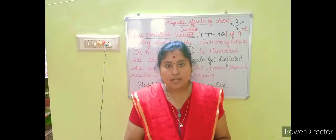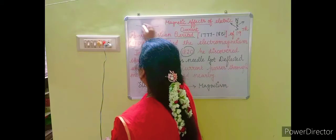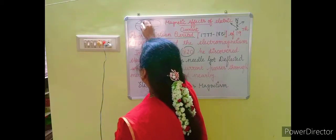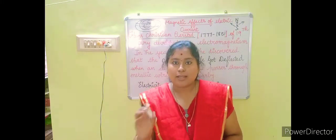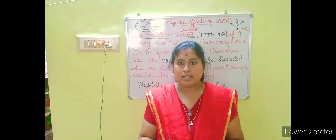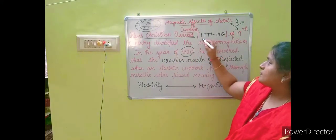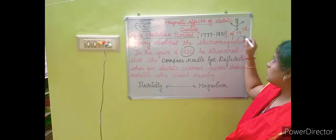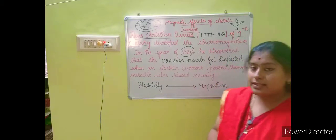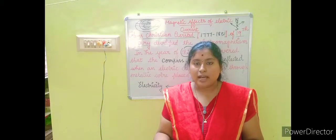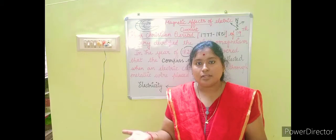What he discovered from this event is that when an electric current is passed through a particular object, there will surely be a magnetic field produced around it. For example, if you take a copper wire and pass electric current through it, there will be a magnetic field created around that wire. This concept was discovered by Hans Christian Ørsted, with a time period from 1777 to 1851, and this incident happened in the year 1820.